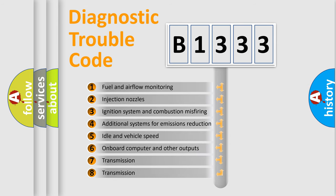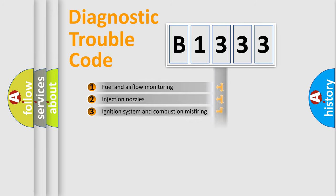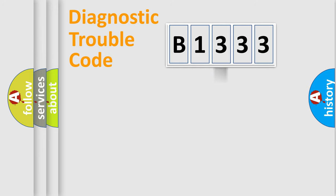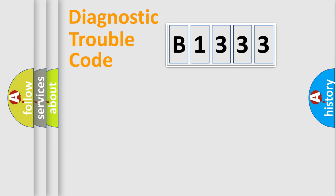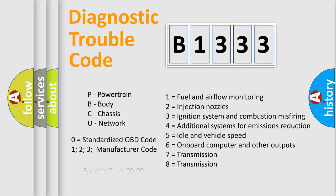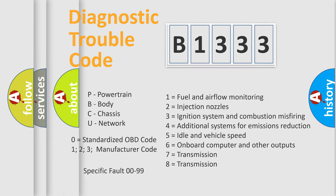The third character specifies a subset of errors. The distribution shown is valid only for the standardized DTC code. Only the last two characters define the specific fault of the group. Such a division is valid only if the second character code is expressed by the number zero.